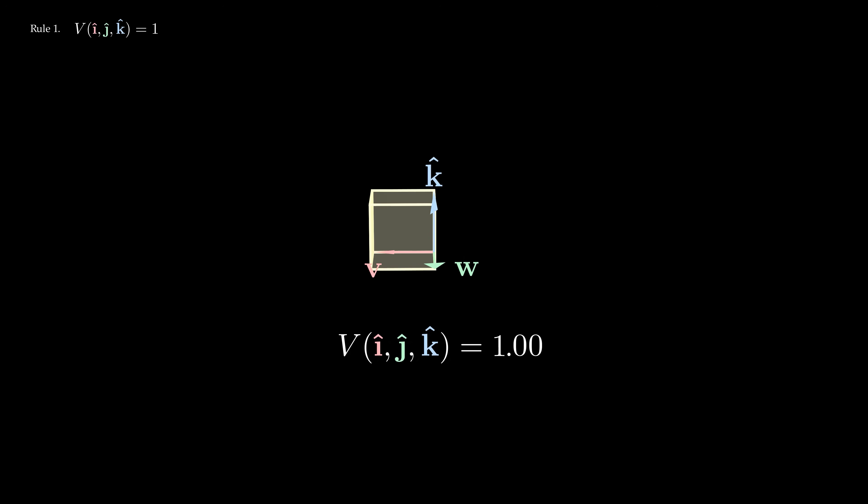Similarly, if I squish two vectors onto the same line, then the volume becomes 0, since a flat rectangle has no volume. This holds for whichever two vectors you choose, so if any two slots of the volume function V have the same vector, then the volume must be 0.